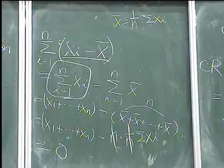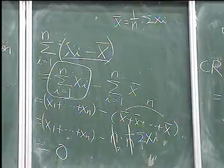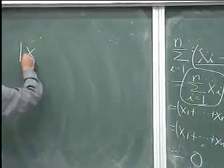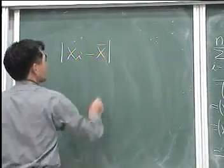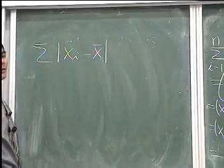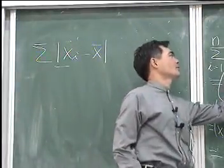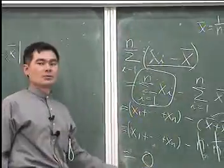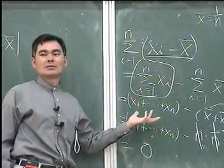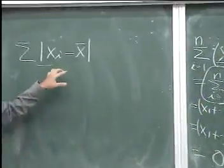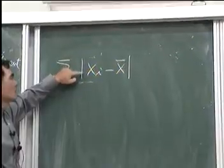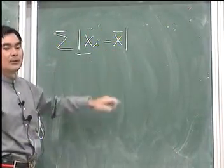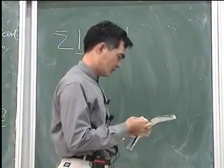Because summing the deviations gives zero, we instead take the absolute value of each deviation and add them up. This is the mean absolute deviation. Without the absolute value, whatever you compute gives zero, so you cannot measure dispersion that way.